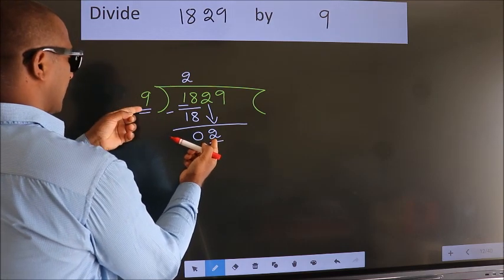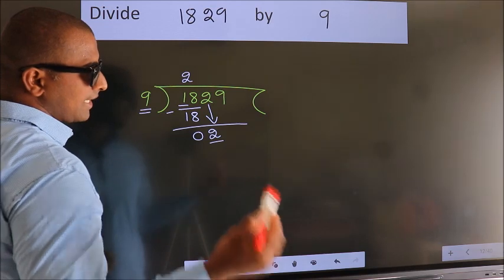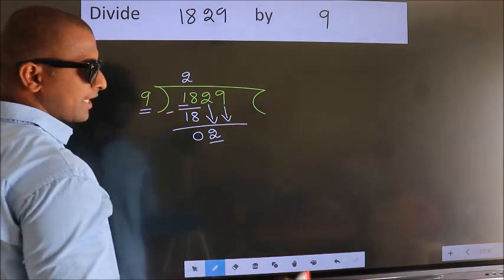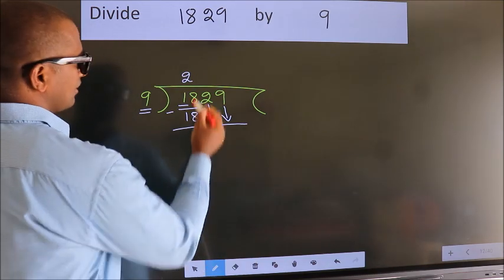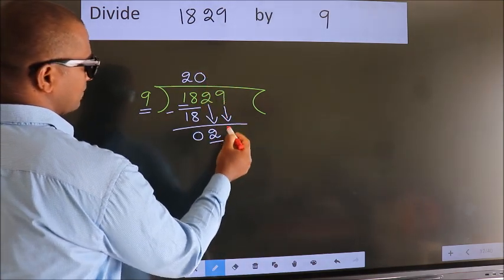2 is smaller than 9, so we should bring down the second number. And the rule to bring down the second number is to put 0 here. Then only we can bring down this number.